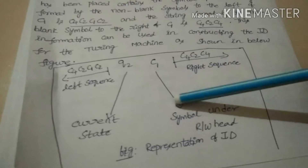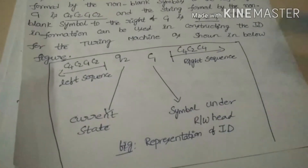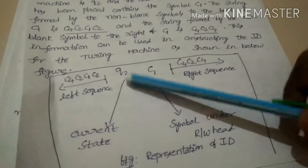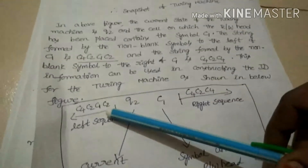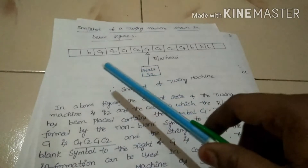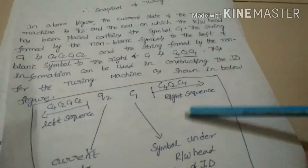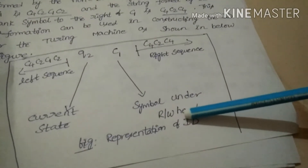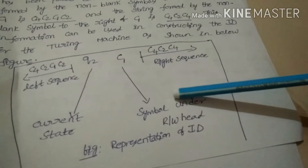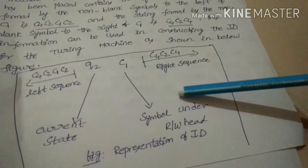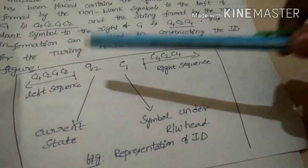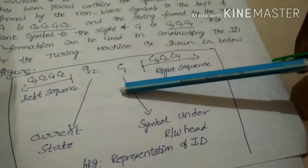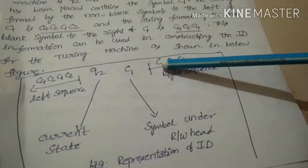The ID, or instantaneous description, is represented as follows: Q2 is the current state. The left sequence before C1 is: C4, C2, C1, C2. The right sequence after C1 is: C4, C2, C4. The symbol under the read-write head is C1. To construct the ID, we include the current state in the input string to the left of the symbol under the read-write head. There will be a blank symbol as part of the left or right sub-string.